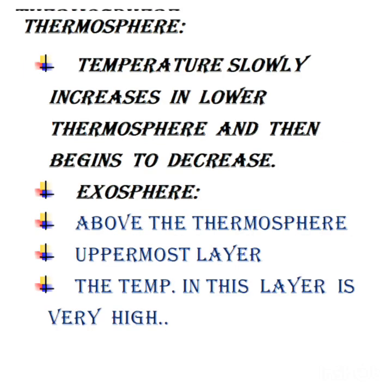Thermosphere: this layer is directly above the mesosphere. It extends from about 90 kilometers to between 500 and 1000 kilometers above the Earth. The temperature slowly increases in the lower thermosphere and then begins to decrease.